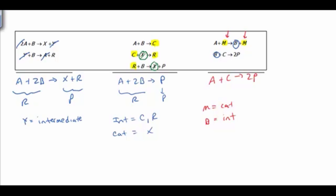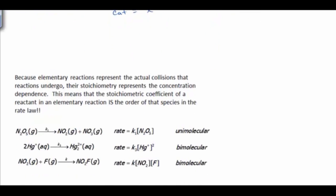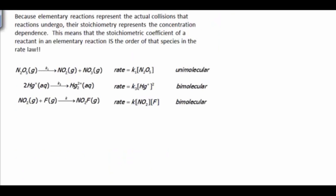So one last thing to know about these mechanisms that will help you solve problems, is that because an elementary step represents the actual collisions that are happening, that means that the stoichiometry is telling you the relative ratios of the concentrations that are needed for the reaction to occur. And the immediate implication is that the stoichiometric coefficient of a reactant in an elementary reaction is the order of that species, the order of reaction.